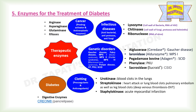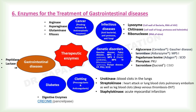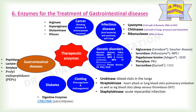Creon is a digestive enzyme with lipase activity. It was reported that after six months of Creon treatment, patients achieved better control of diabetes, improvement in nutrition, and overall improvement in quality of life. Various digestive enzymes are also used for the treatment of gastrointestinal diseases. These include peptidase, lactase, amylases, and prolyl endopeptidase (PEPs).